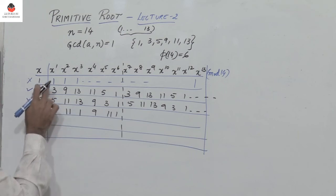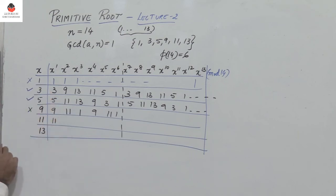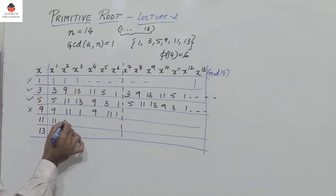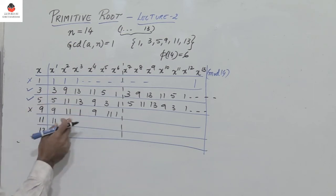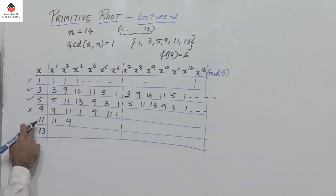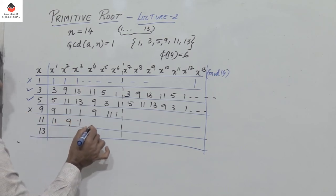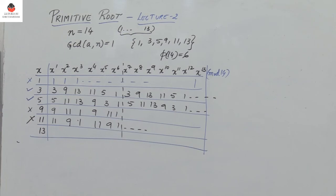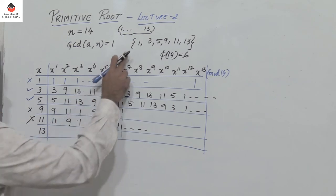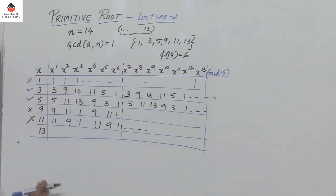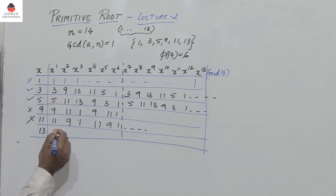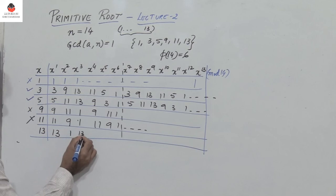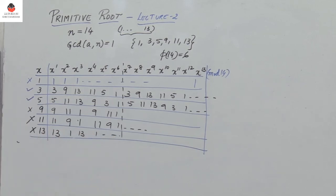Next consider 11. 11 power 1 mod 14 is 11. 11 squared mod 14 is 9. 11 cubed is 9 times 11 mod 14, which gives us 1, and this repeats. So therefore 11 is also not a primitive root of 14, because it does not generate all the numbers which are relatively prime to 14. Next is 13. 13 power 1 in mod 14 is 13. 13 squared mod 14 is 1, and of course it repeats 13, 1, and so on. So 13 is also not a primitive root of 14.